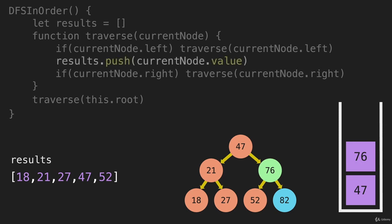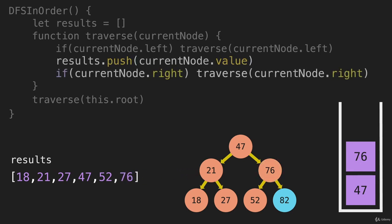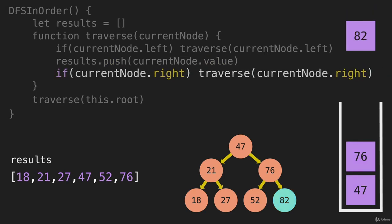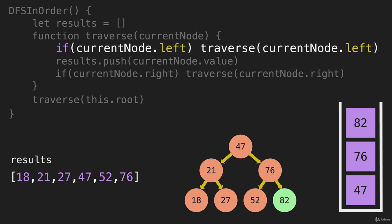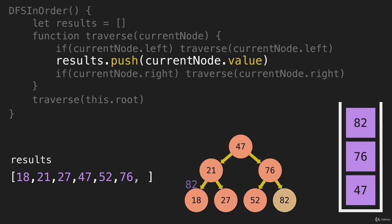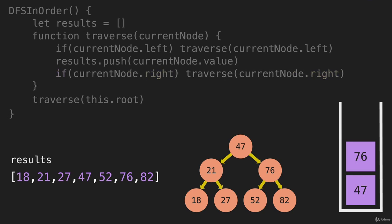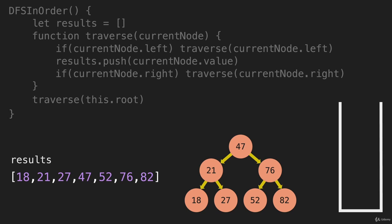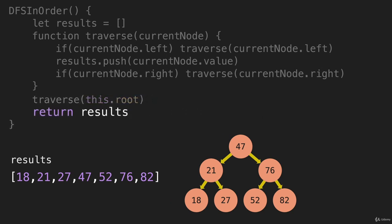76 has already gone left, so now we push the value 76 into the array. Then it goes right to the 82, which gets pushed onto the stack. The 82 is going to try to go left — we don't have anything to the left. We push its value into the array, then go right — there's nothing there — so we pop that from the stack. The 76 has already gone left, written its value, and gone right, so we pop that. The same is true for 47, and we pop that from the stack. 47 was the original function call, the root. The only thing left is to return that results array.